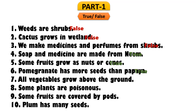Question 7: All vegetables grow above the ground. No, it is false, because some vegetables grow beneath the ground. Question 8: Some plants are poisonous. Yes, that is true — some plants can be poisonous. Question 9: Some fruits are covered by pods. Yes, it is true that some fruits are covered by pods. Question 10: Plum has many seeds. No, plum has only one seed, so the statement is false. Read each sentence carefully and write true or false accordingly.